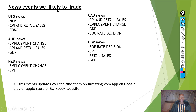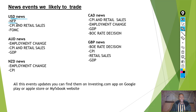Now let's look at the news events we are likely to trade — the macroeconomic indicators, meaning the overall view of the economy. Under USD news, firstly we have the NFP — the Non-Farm Payrolls. The NFP focuses mainly on the employment change of the USA, meaning how many people are employed and how many are unemployed, so we can identify how many people actually contribute to the US economy. They have very high volatility movements and are found in the first week of each month on a Friday.